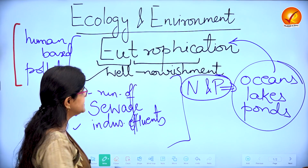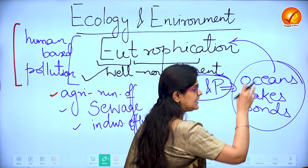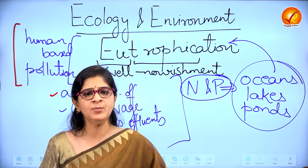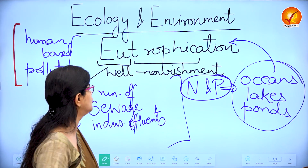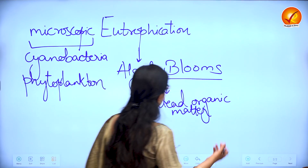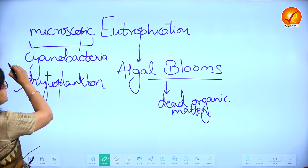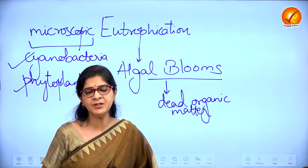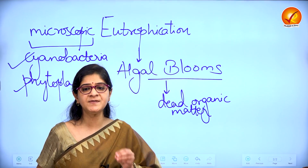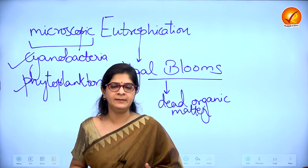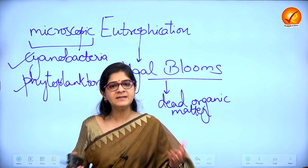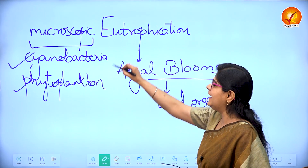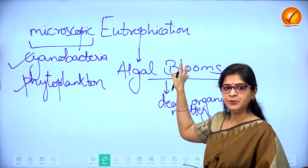Whenever these nutrients land into the water body, there will be a sudden growth of some photosynthetic organisms of that water body. Fast-growing photosynthetic organisms, for example phytoplankton or cyanobacteria, can start to have fast growth — an excessive rate of growth in a short period of time. We say that these cyanobacteria or phytoplankton proliferate, and this overgrowth of microscopic algae is referred to as algal blooms.